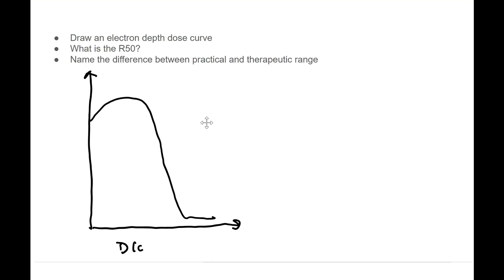Here on the x-axis we're going to have depth and that is in centimeters. Then over here on the y-axis I just do PDD, percent absorbed dose. There's our electron, so that's the first question right there, that's an electron depth dose curve.